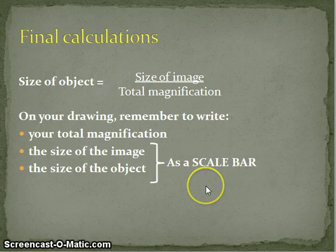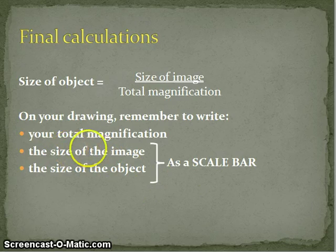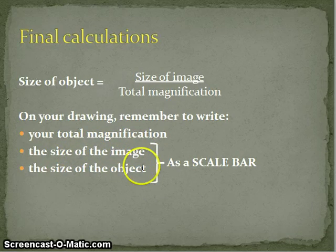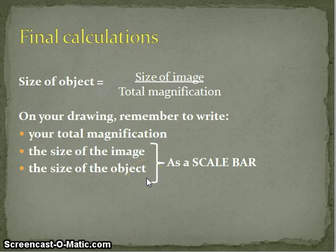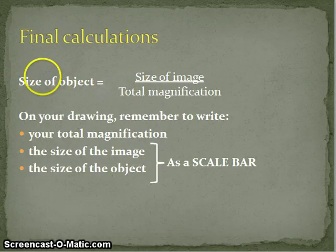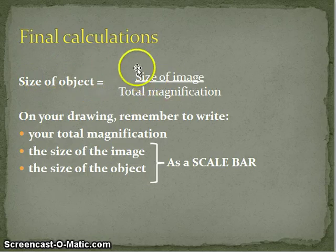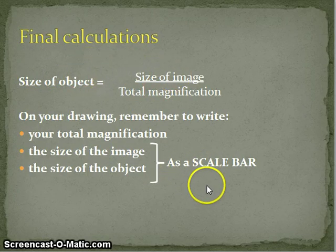For the scale bar, you could draw, for example, one centimeter on your drawing, which represents one centimeter of the image. Above that, write what size the object actually is — what does that one centimeter really represent? You calculate this using the total size of the object divided by the total size of the image, then scale it to whatever length you used for your scale bar.